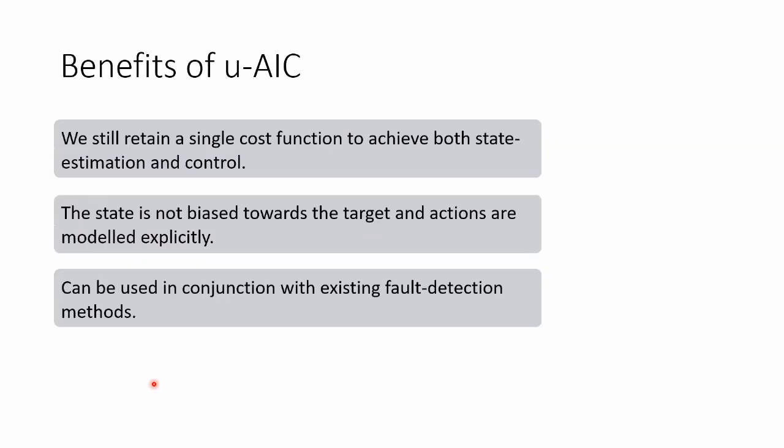So the benefits of the Unbiased Active Inference controller is we still retain a single cost function to achieve both estimation and control. So it gives us a lot of the benefits we mentioned earlier. But now the state is not biased towards the target and the actions are explicitly modeled.